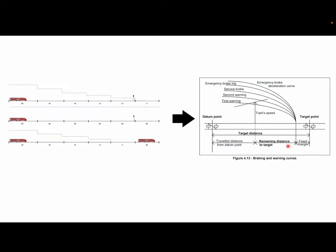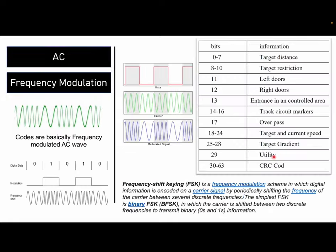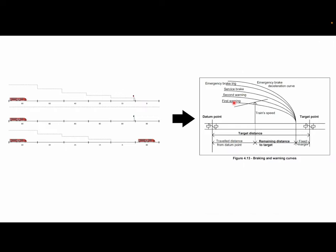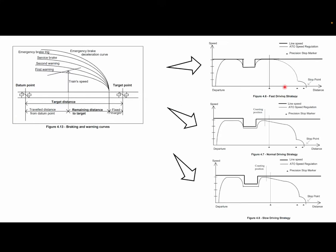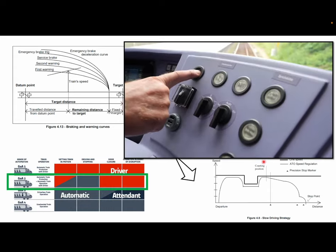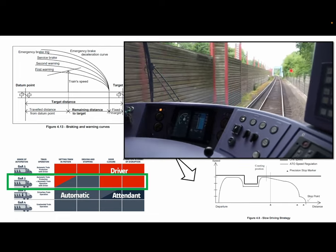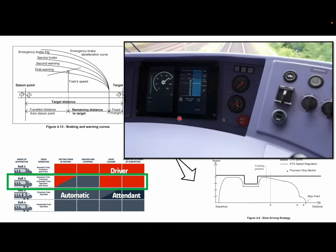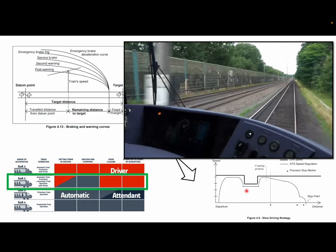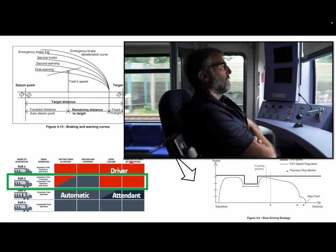What that means is that instead of just knowing the speed as in pulse code signaling, the train now has a lot more information — target distance, restrictions, gradients, and more. Because the train knows all of these things, it can do much more precise stopping at the exact target point. The train can have an aggressive, normal, or conservative driving strategy. And because of all the information the cab now has, you can enable ATO — automatic train operation — where the driver only needs to press buttons and watch for obstructions while the train drives itself.